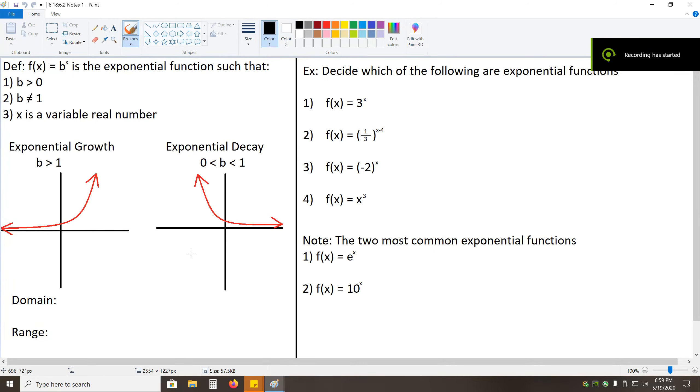In this section, we're going to be talking about exponential functions. To start off with, we say f of x equals b to the x power is the exponential function such that b is greater than 0, b does not equal 1, and it's important to note that b is also a constant, so it's not a variable. And finally, x is a variable, and it is a real number.